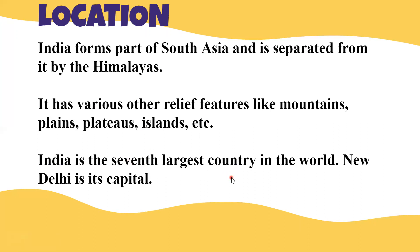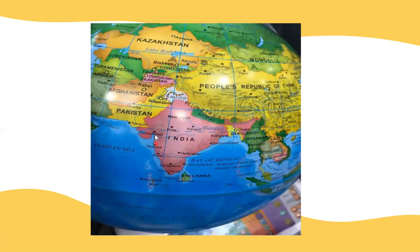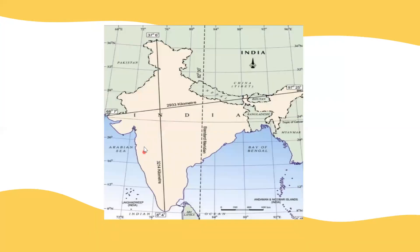New Delhi is the capital of our country. This picture shows where India is located. You can see that India is located in the south of Asia. It has many neighboring countries: Pakistan, Afghanistan, Nepal, Myanmar, Bangladesh, and Sri Lanka. So India shares its borders with many neighboring countries.